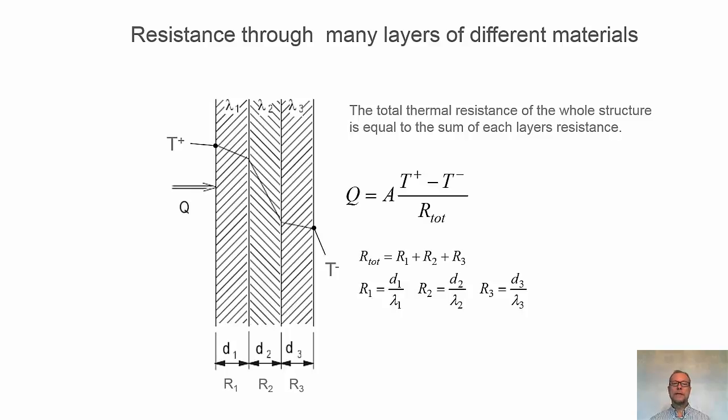This can be extrapolated to when we have many layers together, still one-dimensional cases. We have three different materials, different thicknesses, with T plus on the left-hand surface and T minus on the right-hand surface. The heat flow Q is proportional to the area A times the temperature difference across the whole structure, divided by the total thermal resistance of all layers together. They are obtained by adding the thermal resistance of each layer. R tot equals R1 plus R2 plus R3, and R1 is, for instance, the thickness divided by the thermal conductivity lambda 1 of that layer.